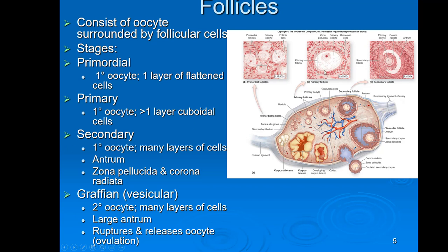The primary follicle progresses into a secondary follicle — here's where it gets tricky. The secondary follicle still contains a primary oocyte, but it looks completely different. You start to get this big fluid-filled space called the antrum. In addition, you get a clear ring around the oocyte called the zona pellucida, and a layer of cells right outside of that called the corona radiata.